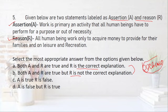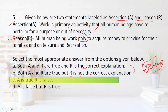Question 5: Assertion — Work is a primary activity that all human beings have to perform for a purpose or out of necessity. This sentence seems correct. Reason — All human beings work only to acquire money to provide for their families and spend on leisure and recreation. If you read this you might think both options are correct, but read very carefully: 'only to acquire money' — I don't think this is correct, as people work for many other purposes such as social welfare. So A is true and R is false. Had you not read the word 'only,' you would have gone for option A or B.